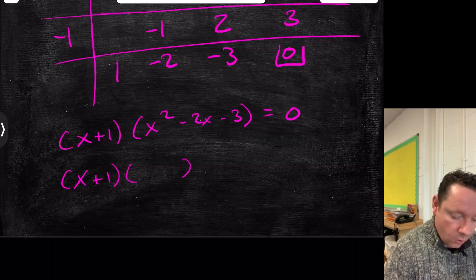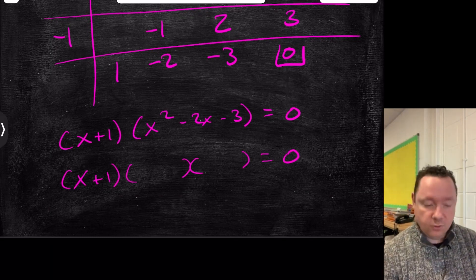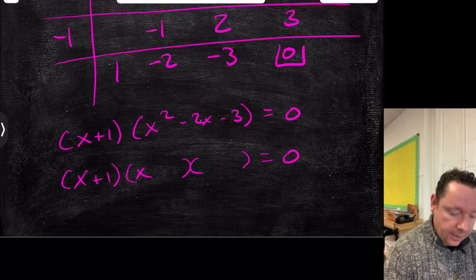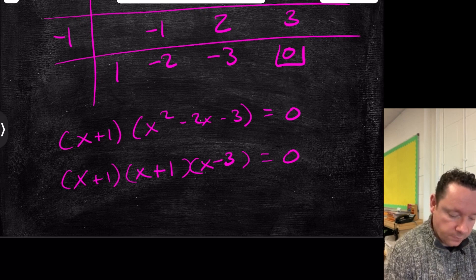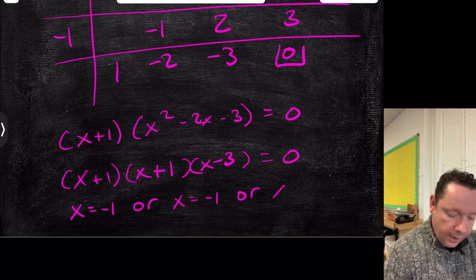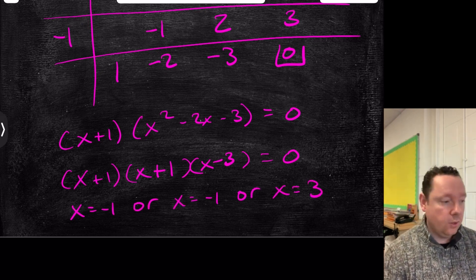x plus 1, or there'll be no solutions. b squared minus 4ac would tell you that. x and x, we've got 3 and 1, minus 3 plus 1 is minus 2, so x equals minus 1, or x equals minus 1, or x equals 3. We've got a repeated root, which means the turning point is on as one of the roots.